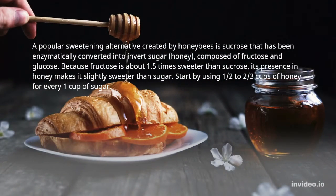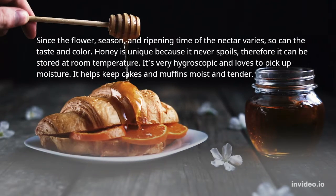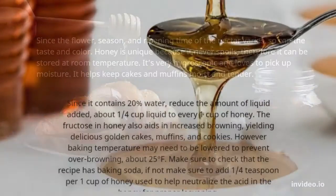Honey. A popular sweetening alternative created by honeybees — it is sucrose that has been enzymatically converted into invert sugar, composed of fructose and glucose. Because fructose is about 1.5 times sweeter than sucrose, its presence in honey makes it slightly sweeter than sugar. Start by using half to two-thirds cups of honey for every one cup of sugar. Since the flower, season, and ripening time of the nectar varies, so can the taste and color. Honey is unique because it never spoils, so it can be stored at room temperature. It's very hygroscopic and loves to pick up moisture, which helps keep cakes and muffins moist and tender.